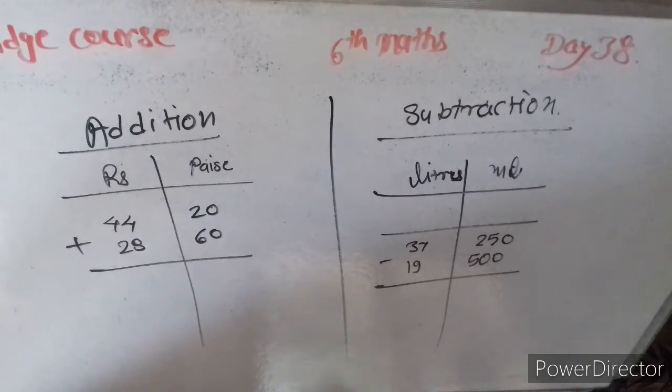We use the units meter, gram and liter everyday to measure length, mass and capacity respectively. While shopping, we use the unit rupees and paise. We use units like day, hours and minutes to measure time. Let us see how to carry out basic operations like addition, subtraction, multiplication and division using these units of measurement.